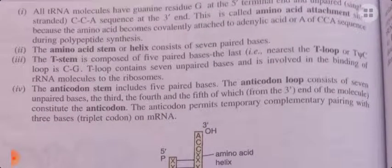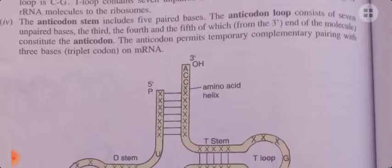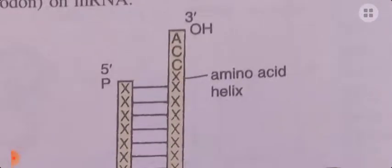The second feature is that the amino acid stem or helix consists of 7 base-paired ribonucleotides. This is the amino acid helix at the 3' end, and it has 7 base pairs present.